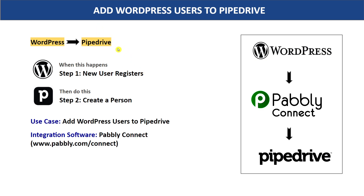In this video, we will learn how to add WordPress users to Pipedrive. Imagine this: a new user called John registers to your WordPress website. You have John's name, email address, and all those details. You want to add John as a person in Pipedrive — maybe to create deals with him in the future or just for backup.